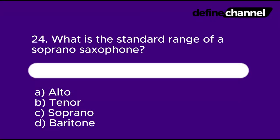Question 24: What is the standard range of a soprano saxophone? A. Alto. B. Tenor. C. Soprano. D. Baritone. In 10 seconds, which do you think is the correct answer?